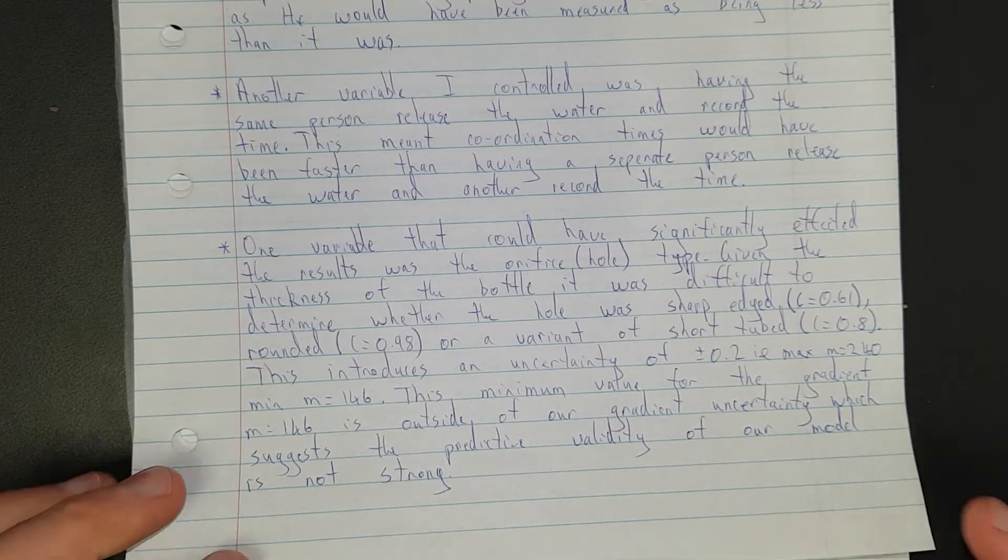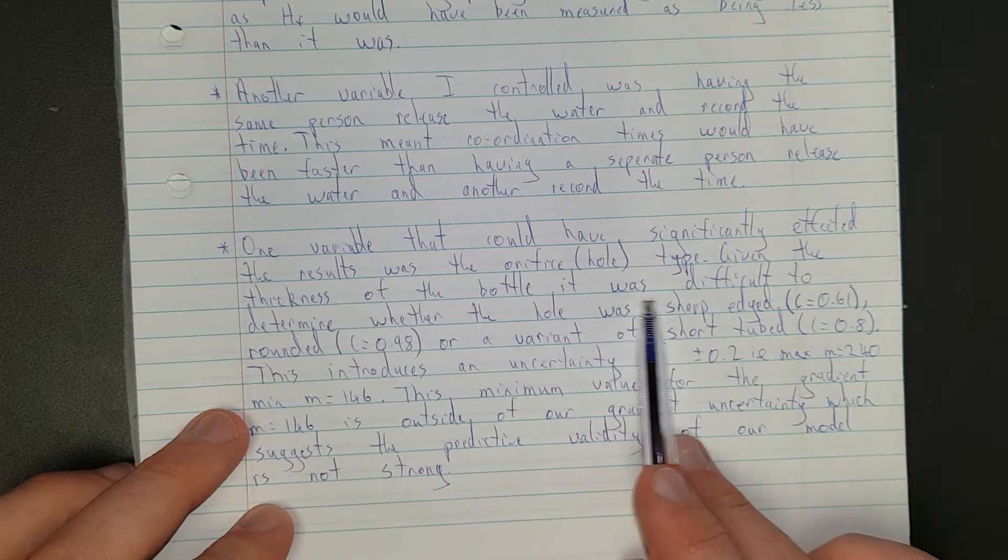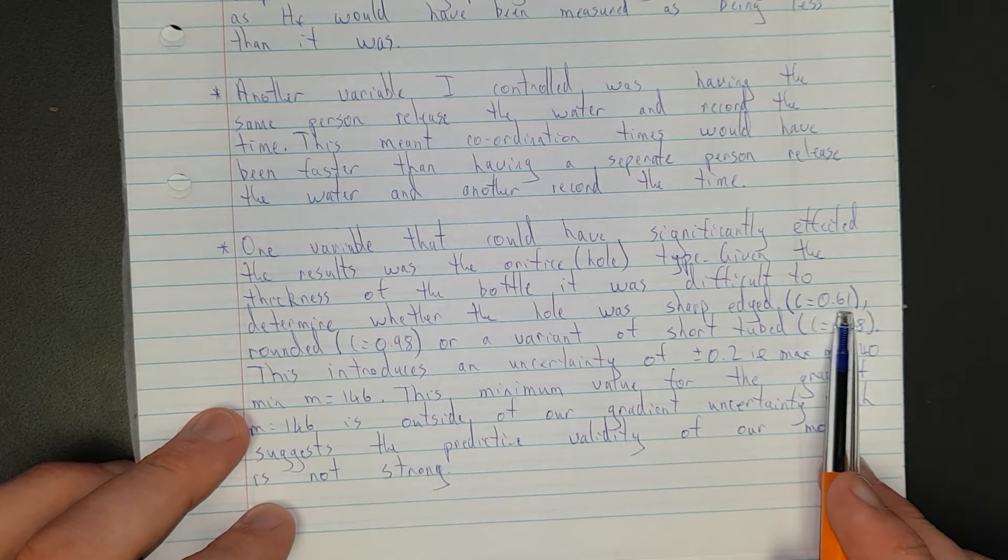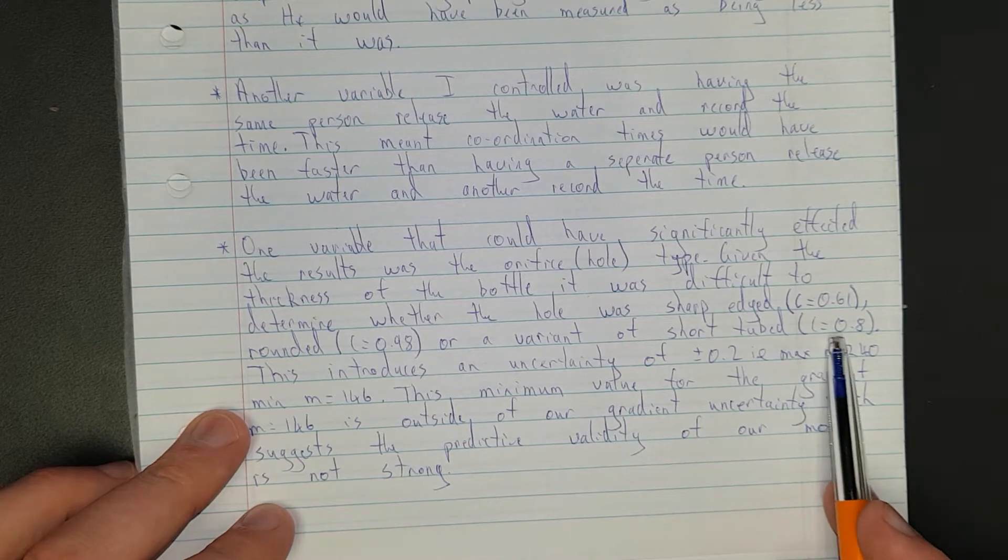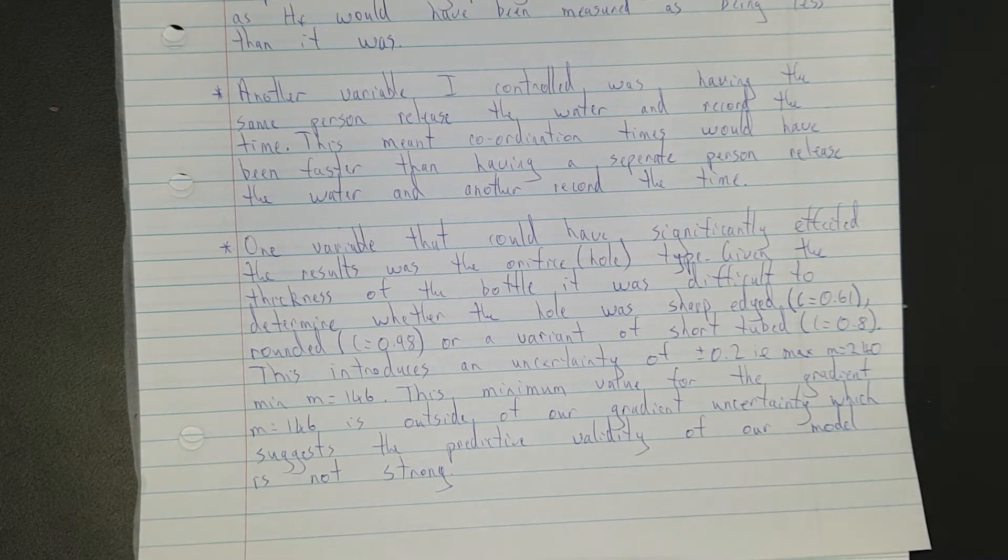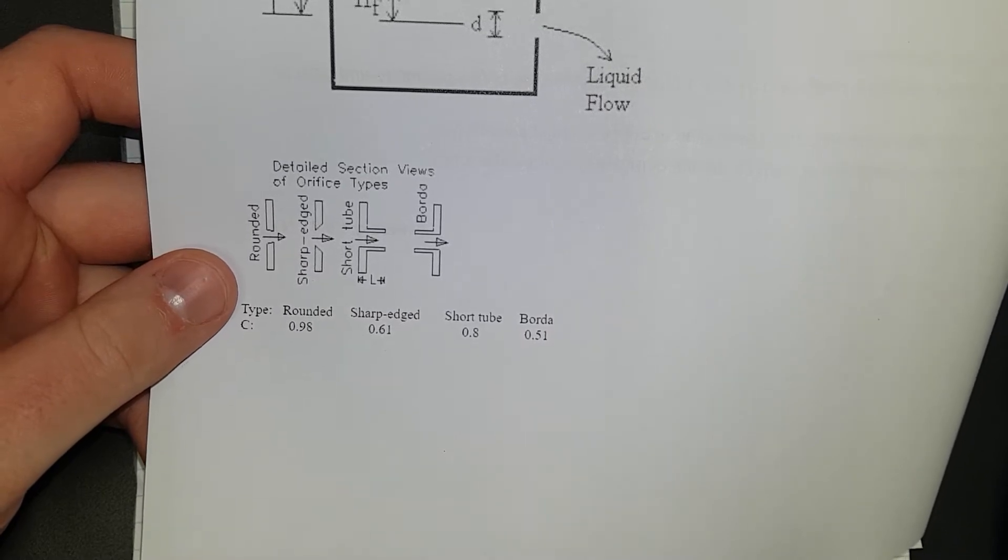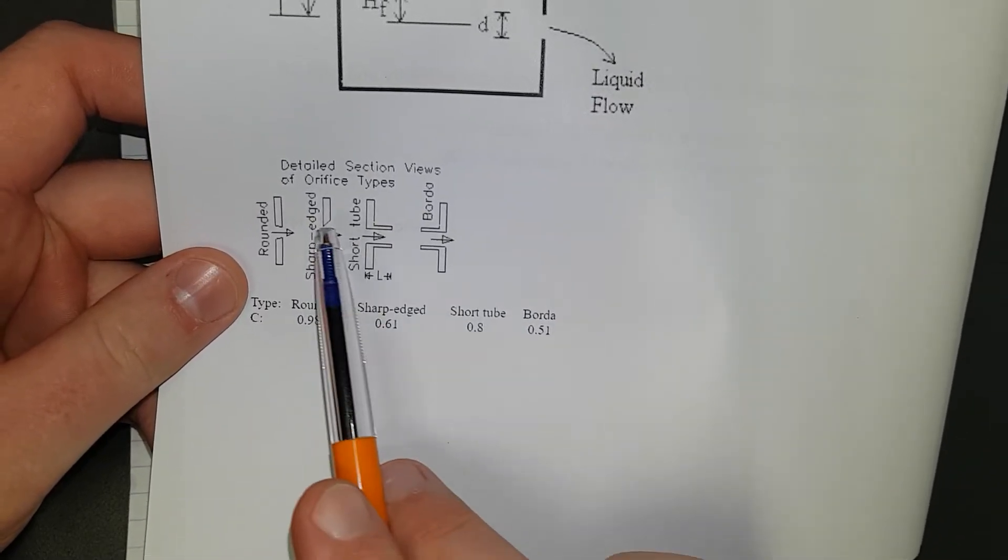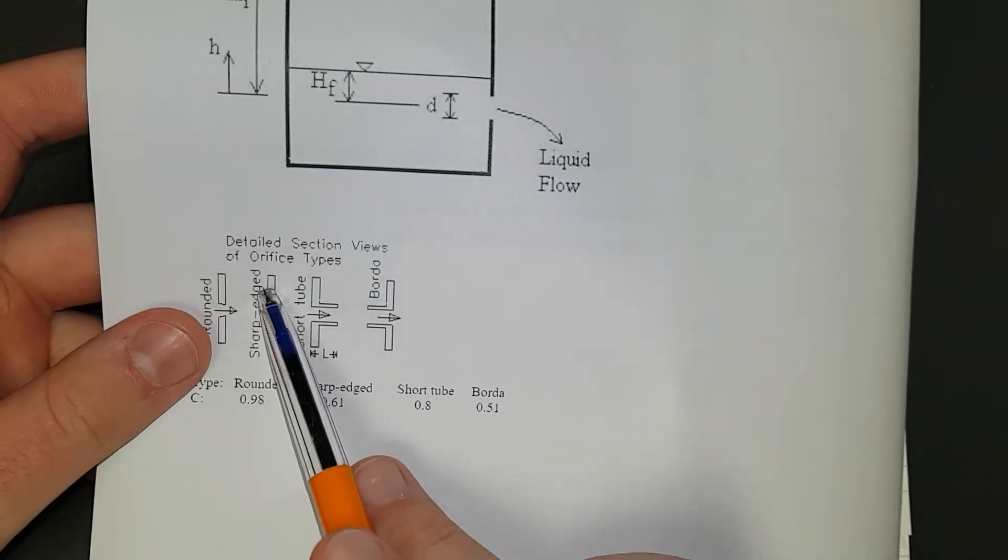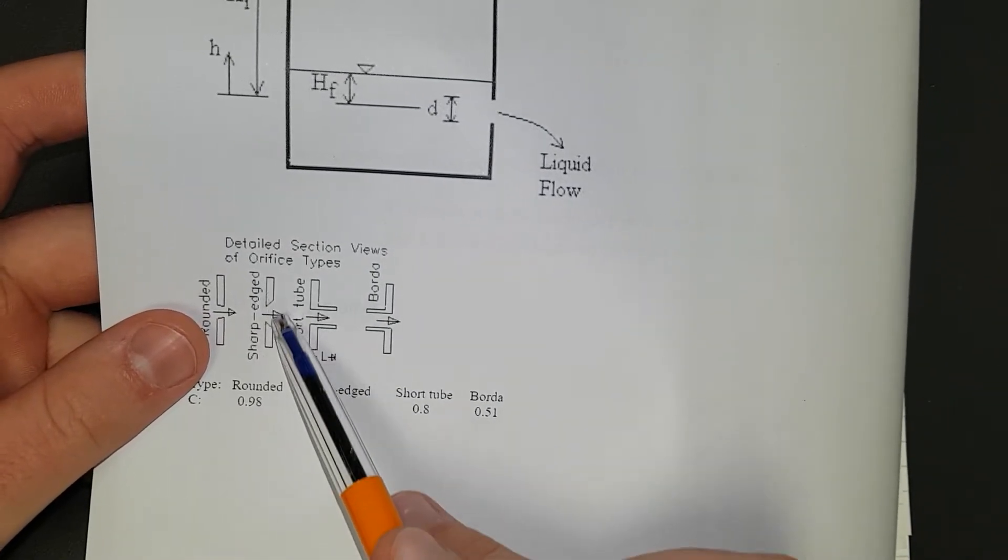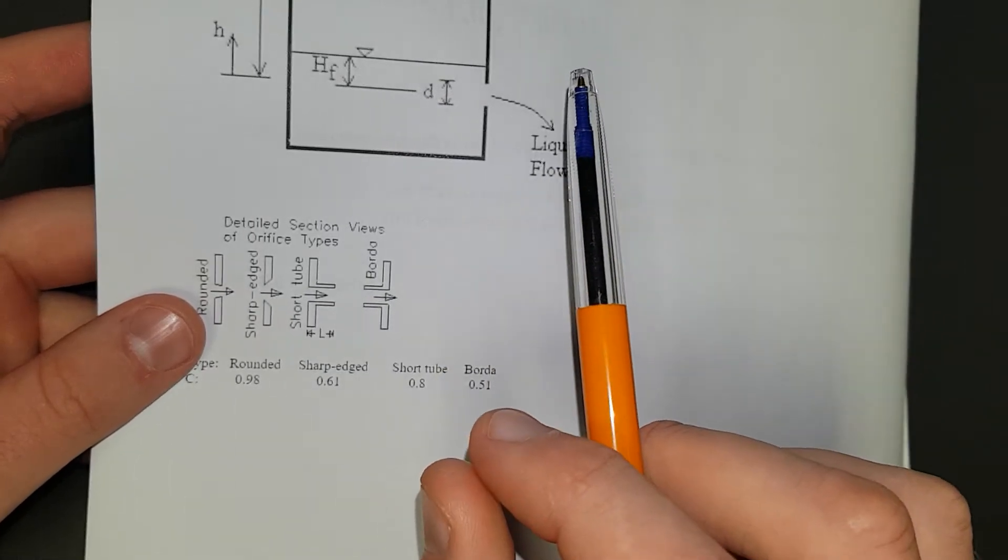So I've said one variable that could have significantly affected the results was the orifice, and that's the hole type. Given the thickness of the bottle it was difficult to determine whether the hole was sharp edged with a coefficient of 0.61, rounded with a coefficient of 0.98, or a variant of the short tubed with a coefficient of 0.8. And we can see that here if you just look on the PDF where we have the orifice types, we have quite a variation in the coefficient. But if you look at the shapes, it was really hard to tell with a bottle what shape it really was. I was thinking it was more sharp edged just because of the way I put the red hot drill bit in. But it was quite difficult to tell because the wall of the bottle is so thin.